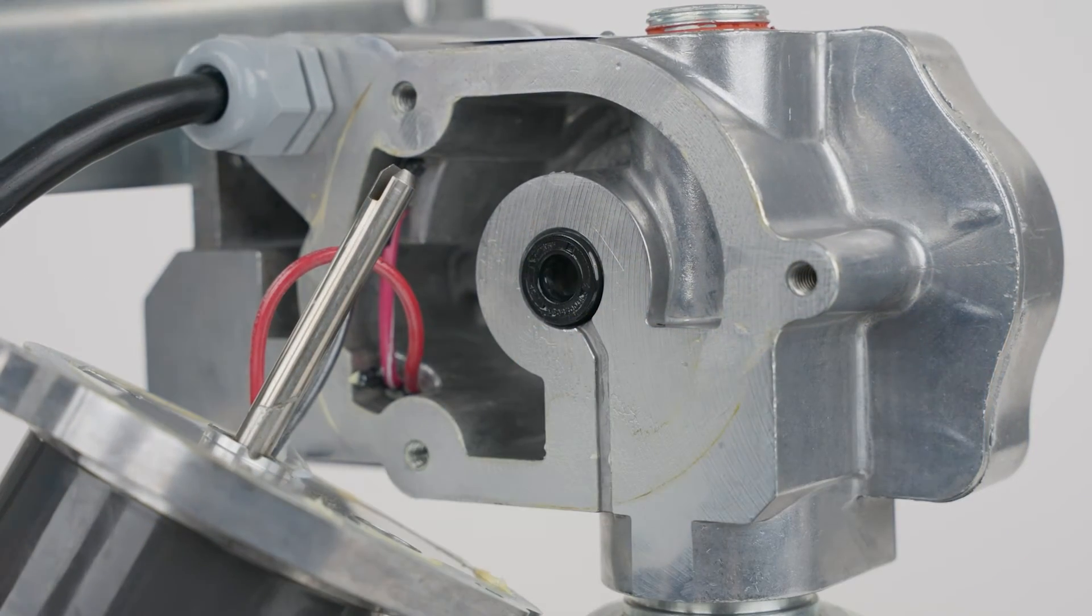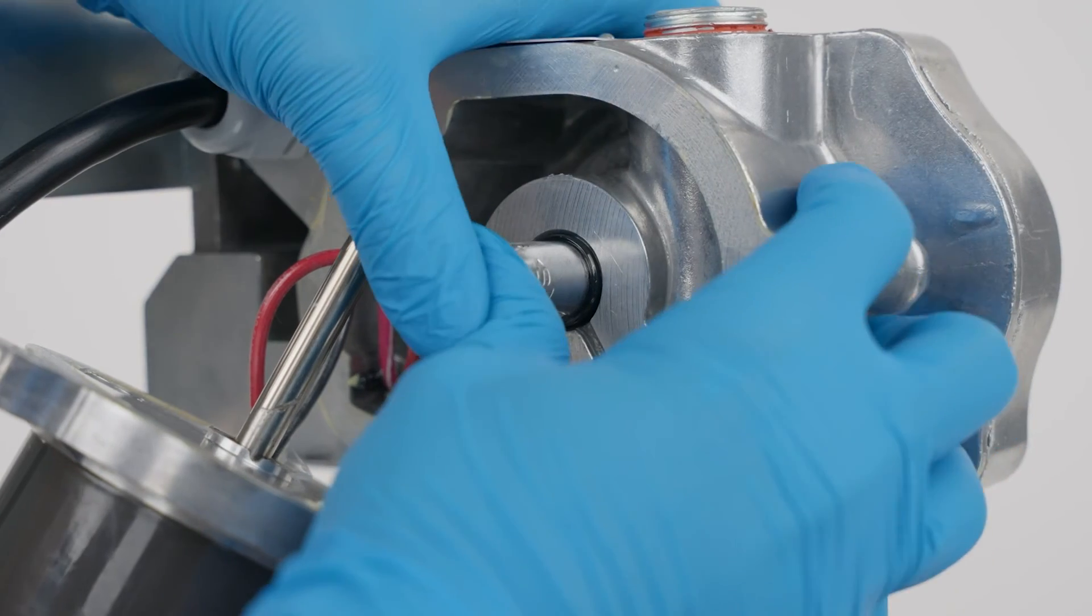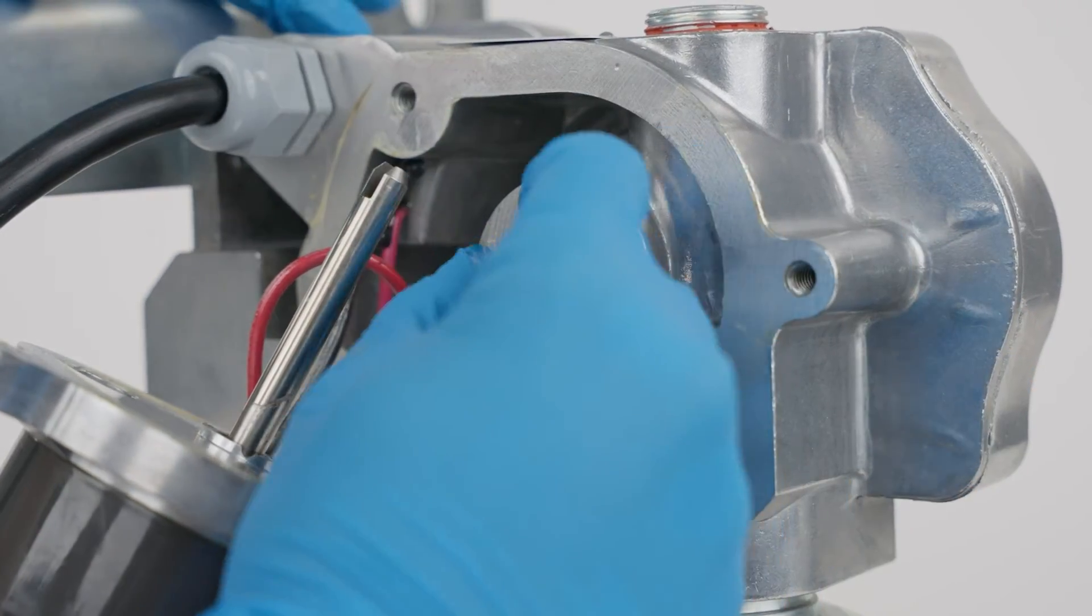Then, using a 7-16 inch socket, press the new motor shaft seal evenly into the housing.